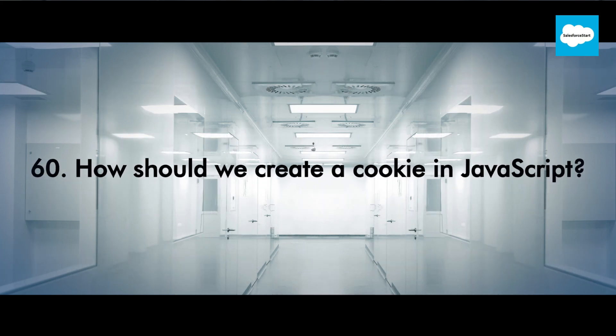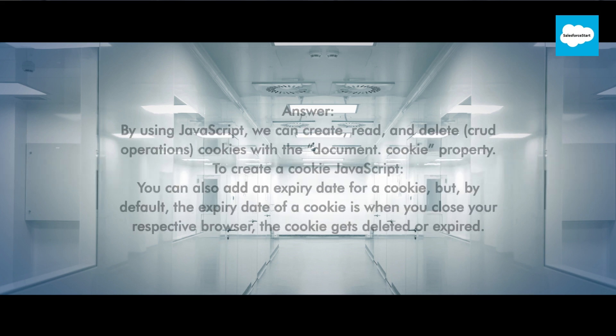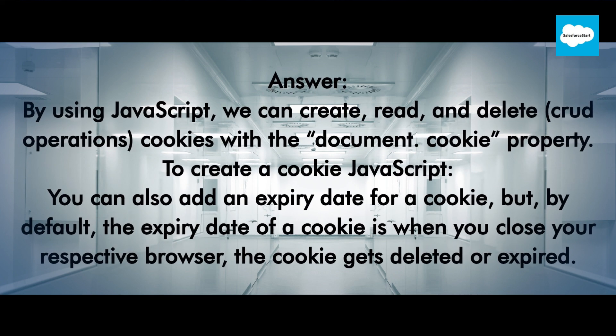How should we create a cookie in JavaScript? By using JavaScript, we can create, read, and delete — CRUD operations — cookies with the document.cookie property. To create a cookie in JavaScript, you can also add an expiry date. By default, the expiry date of a cookie is when you close your browser, at which point the cookie gets deleted or expired.